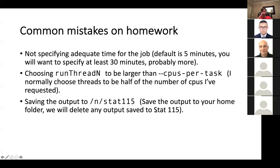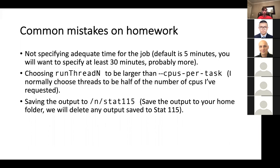Common mistakes: if you don't specify the time, it's going to shut off in the middle and you're not going to get the results, so specify at least 30 minutes — I like to specify two hours just to be safe. Also, if you choose runThreadN to be larger than CPUs per task, you might get an error. Generally you want to choose threads to be a little bit less than the number of CPUs you've requested.